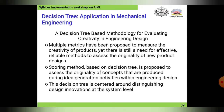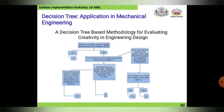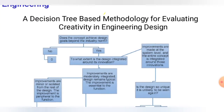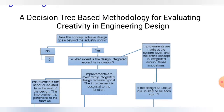This decision tree is centered around distinguishing design innovation at the system level. With the help of the chart here, we can see the root question: 'Does the concept achieve design that goes beyond the industry?' If the answer is no, the result is null. If yes, the next question addresses the extent to which the design integrates around the innovation.